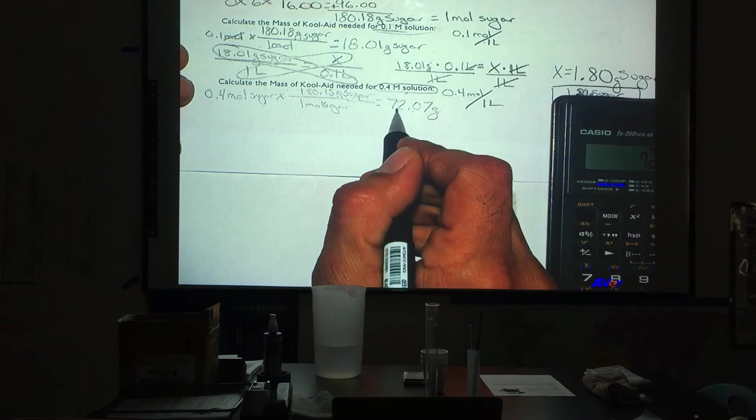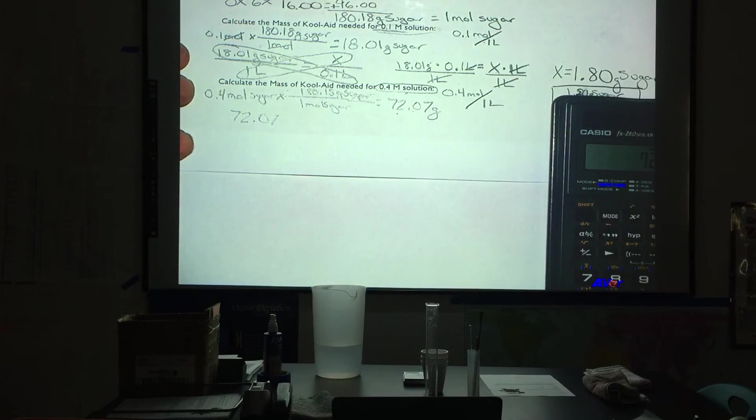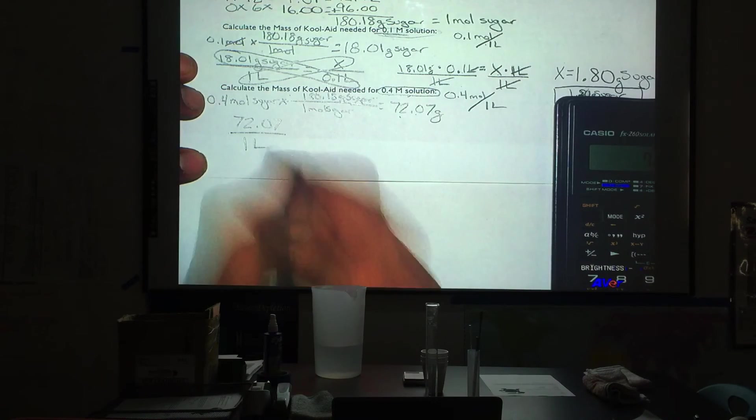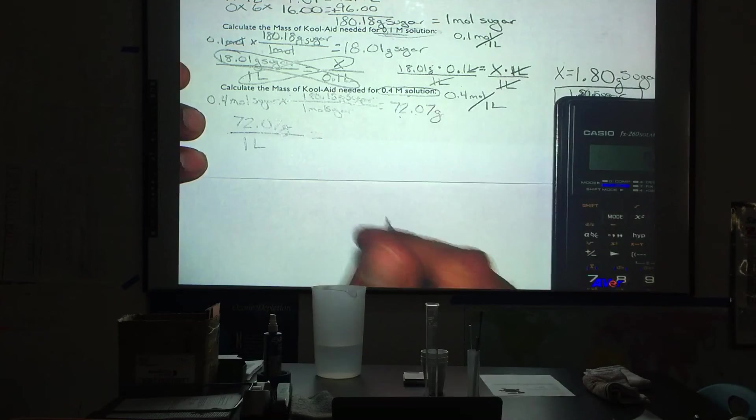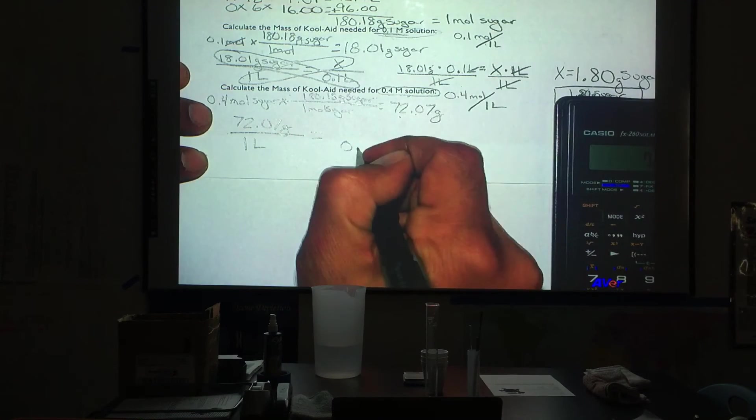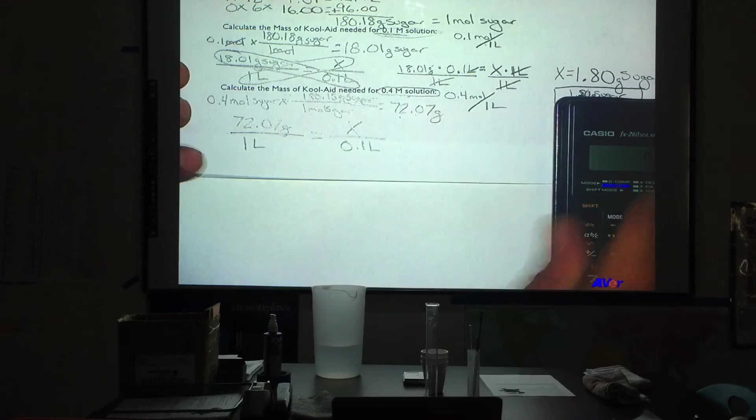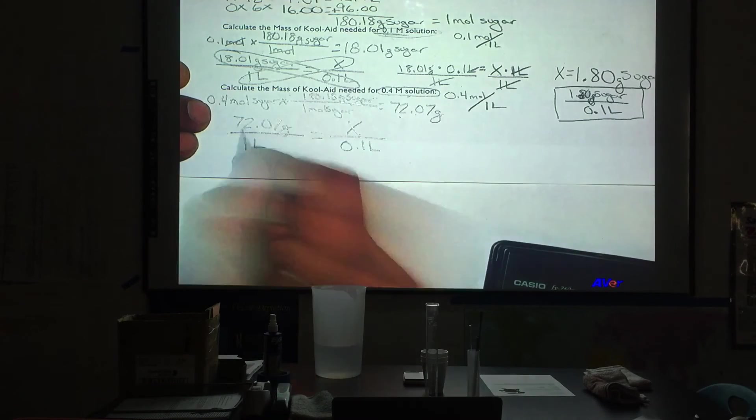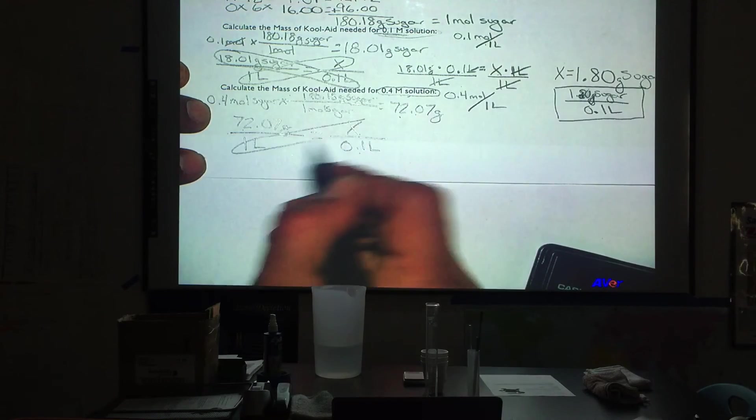So we are going to take this mass, 72.07, the mass that we would need to make one whole liter, and we are going to put that over one liter. We are going to call this grams. And we are going to set this up to make that 0.1 liters. X is what we have to solve for because we want to know how many grams. That is going to be less than this. So with this we do cross multiplication.